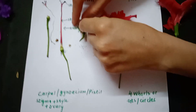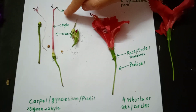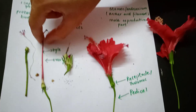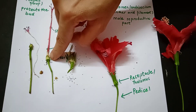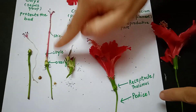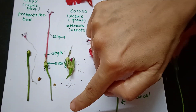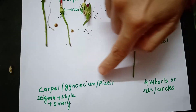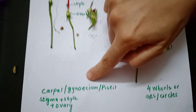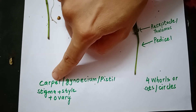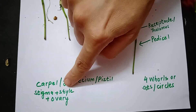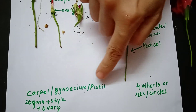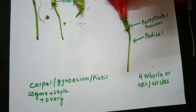Stigma, style, and ovary together are called the carpel, or gynoecium, or pistil. This is the female reproductive part of the flower, and it forms the fourth whorl.